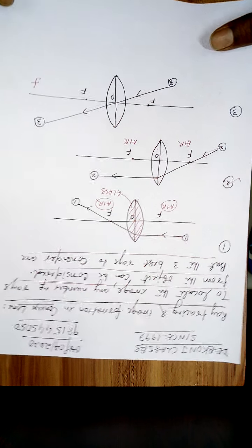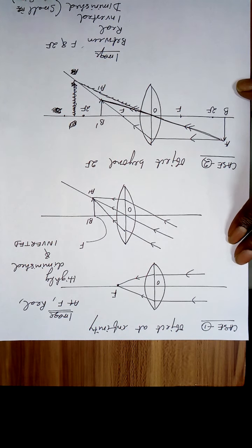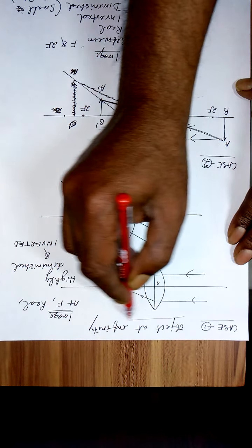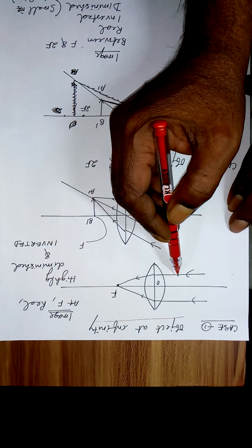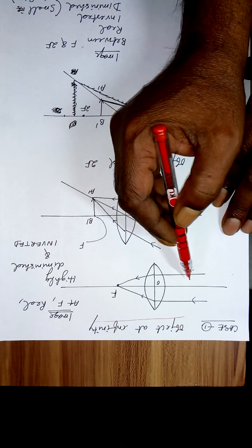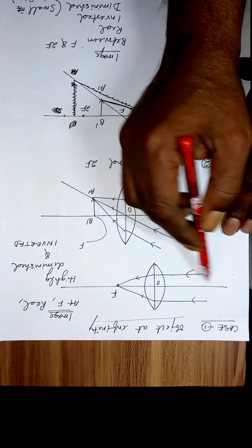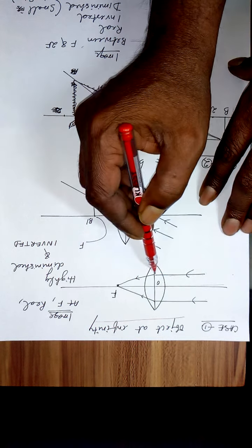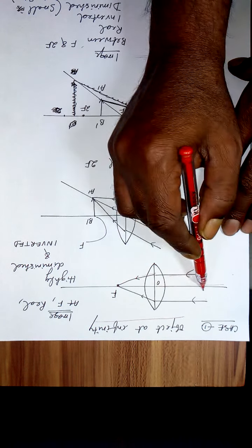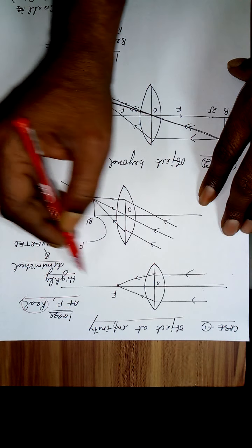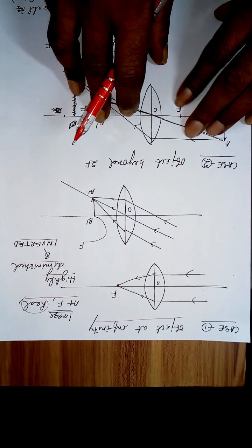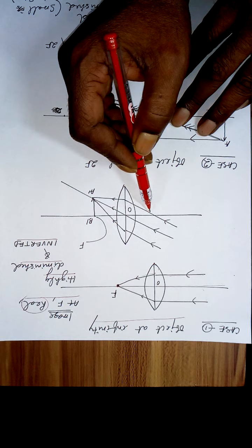We will use the lens formula and lens maker's formula. Case 1: when the object is at infinite distance, the rays from it are parallel to the principal axis. After refraction they pass through the focus, so the image is at F. It is real, highly diminished, and inverted.